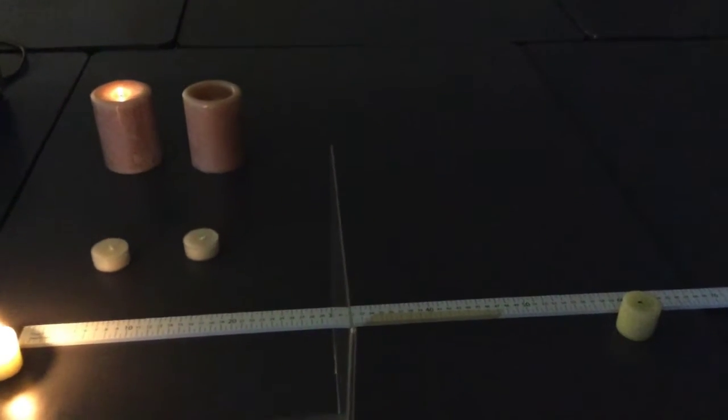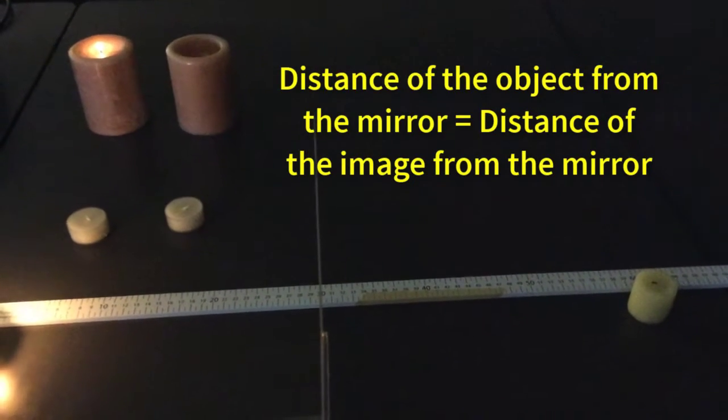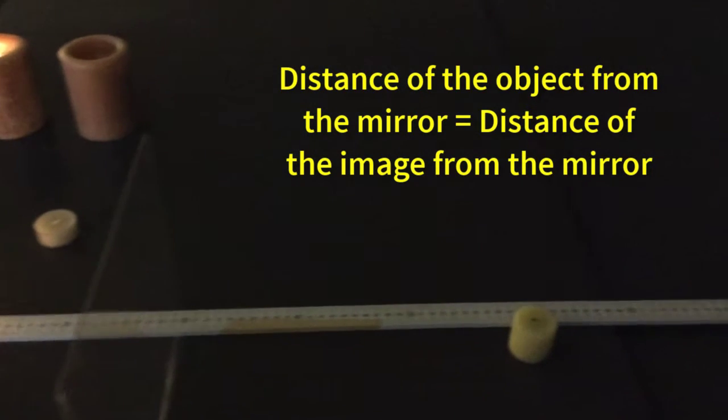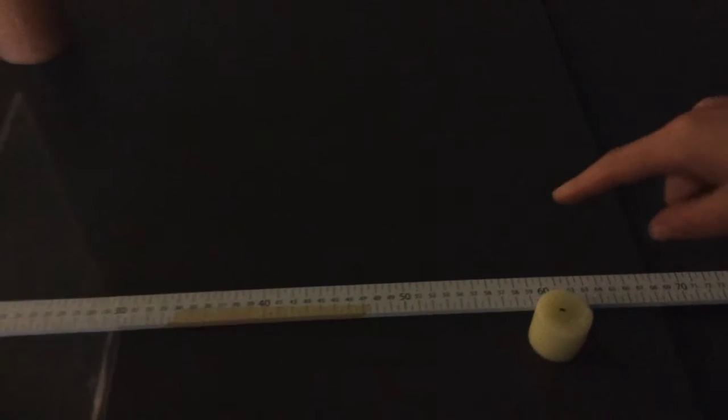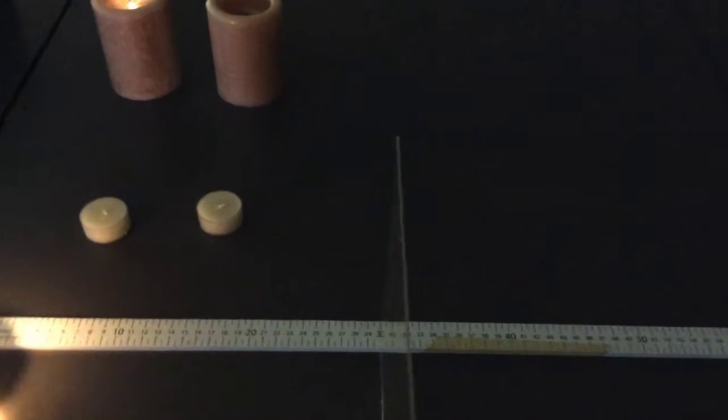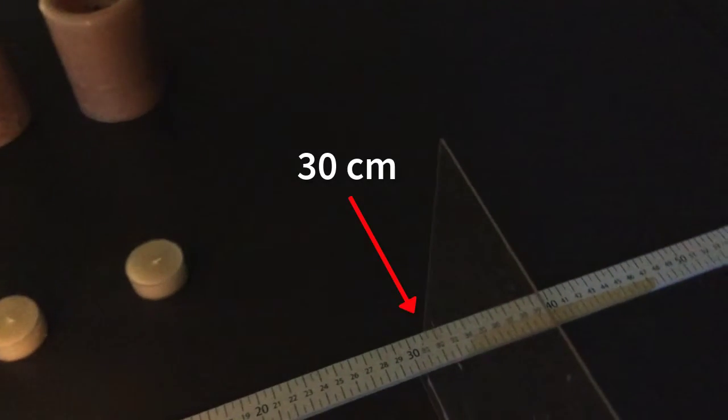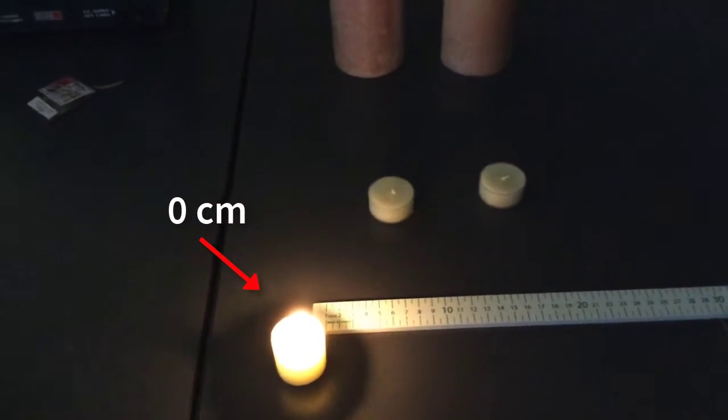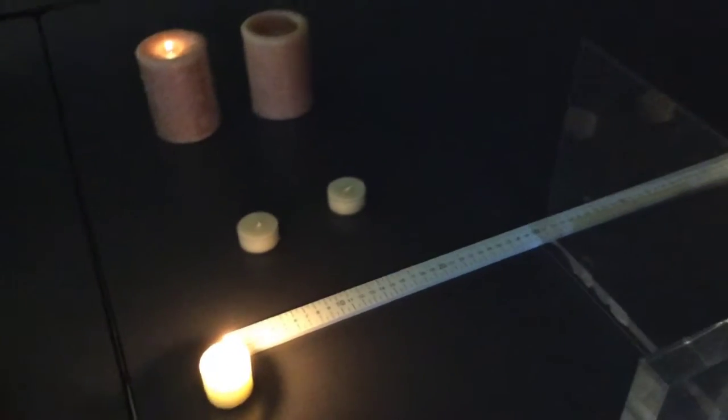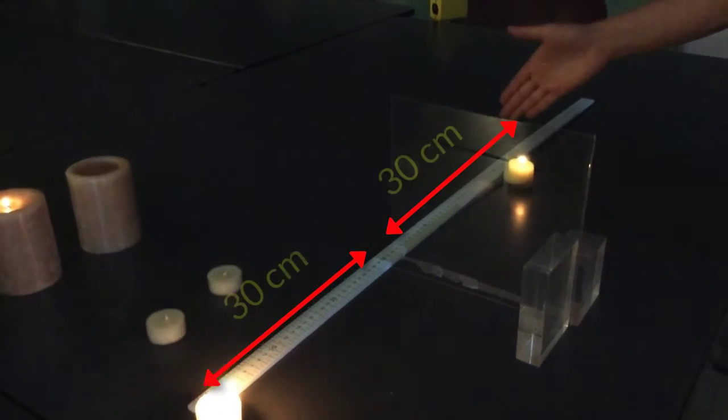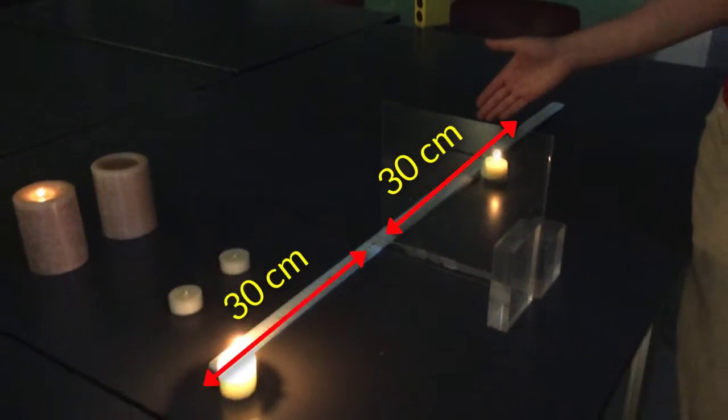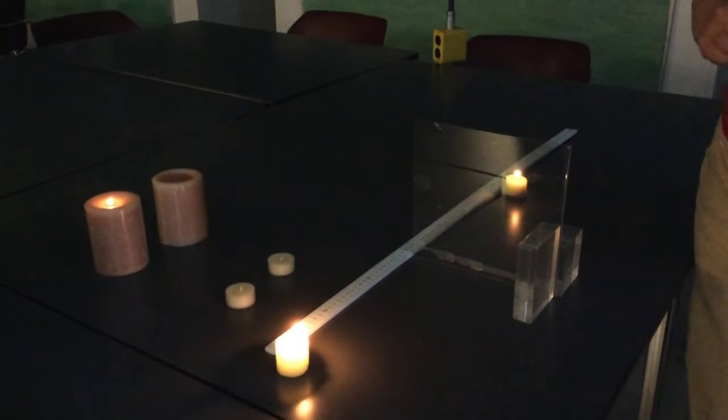And you can see that the distances are equal. Each one is 30 centimeters, and it tells me that this is 60, and the middle is exactly where the slab is 30, and the beginning is 0. So it shows me that the image in a plain mirror appears exactly the same distance from the mirror as the original object from it.